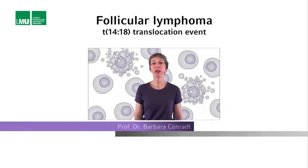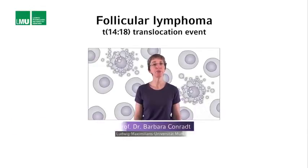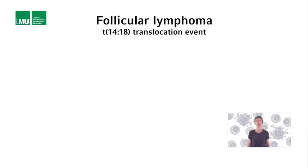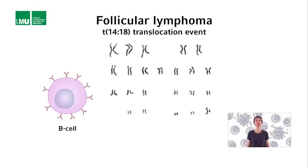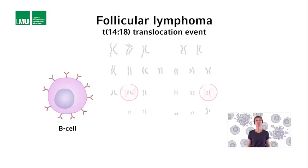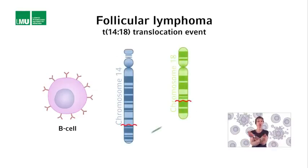Going back to follicular lymphoma and the change in the DNA found in tumor tissue isolated from different patients with follicular lymphoma: in those B cells that make up the tumor tissue, a translocation exists between two of the 23 different types of chromosomes found in the nucleus of every human cell. This translocation is between chromosomes 14 and 18, where the lower arms of chromosome 14 and 18 are basically switched. The switch most likely happened during the development or differentiation of a particular B cell, which then gave rise to the cancer.